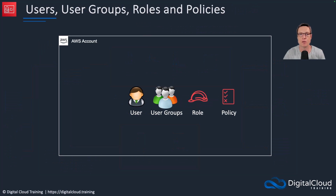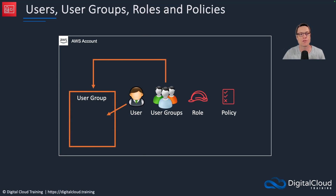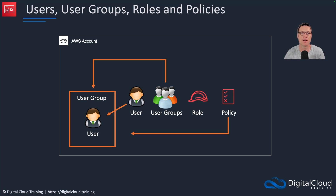A few of the core components of IAM are users, user groups, roles, and policies. User groups are used for adding users and then applying permissions policies. We have the user account you can log in with, the policy that determines what users are allowed to do — what API actions they are allowed to take in the account or on a specific resource — and the way we apply these policies to multiple users is by attaching them to a user group.